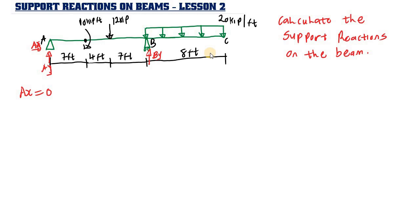The equivalent force of 160 kip is placed at the middle of the rectangle. Now we need to find Ay and By. To find By, we take the summation of moments at point A, setting it equal to zero.